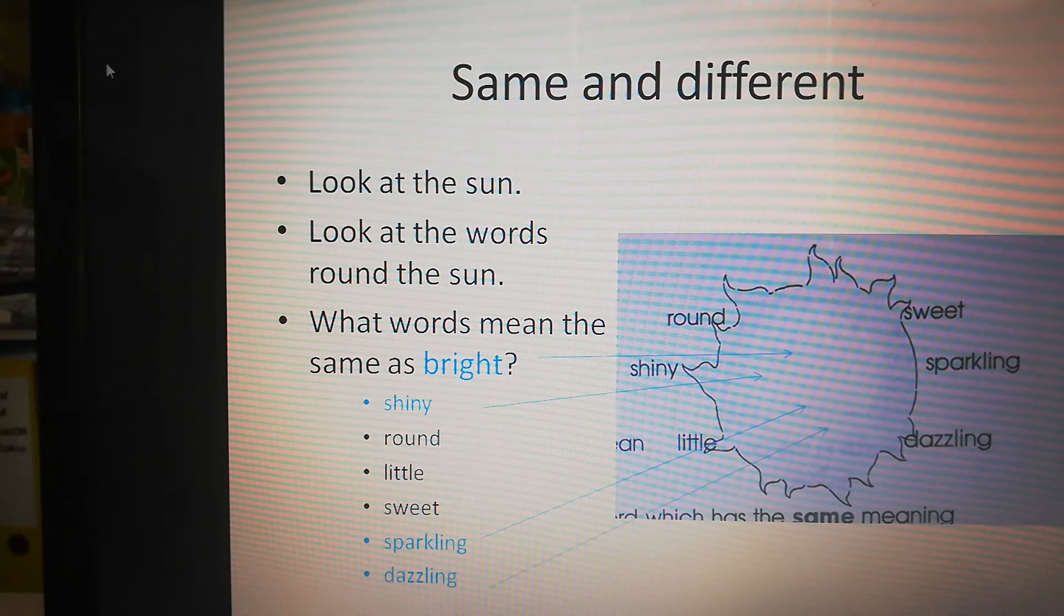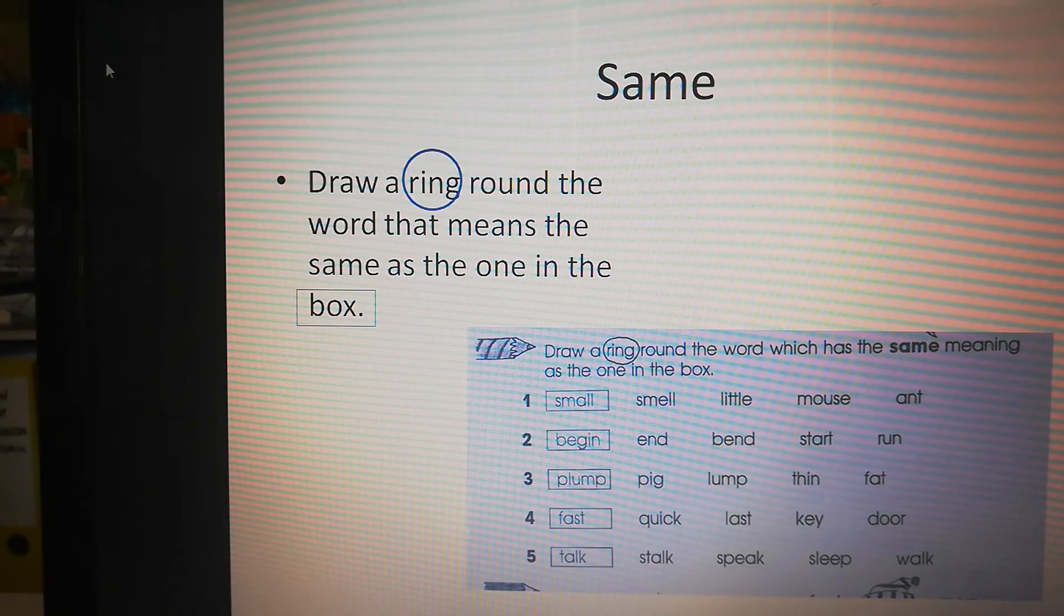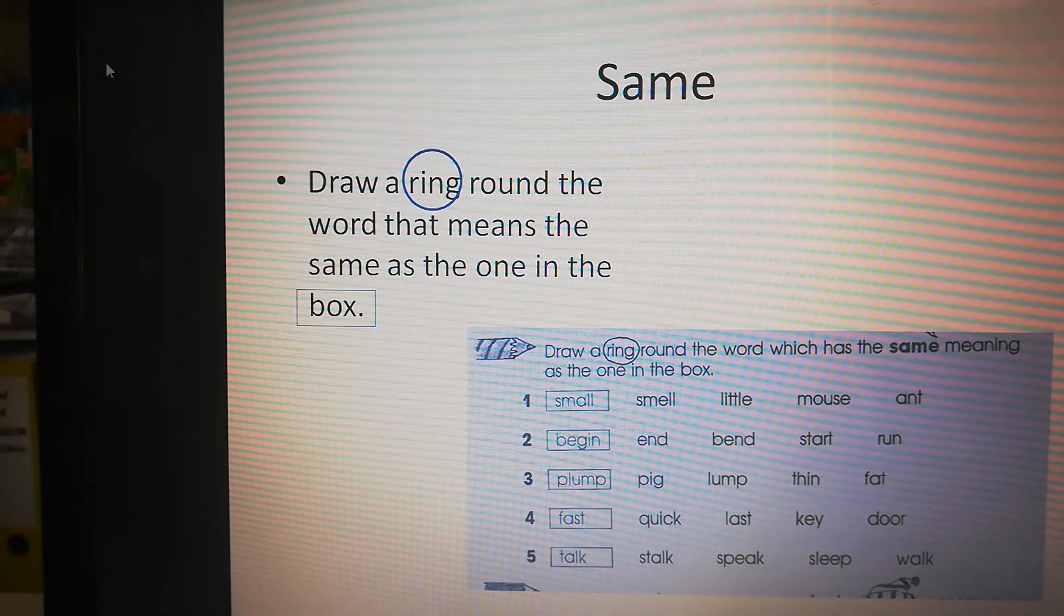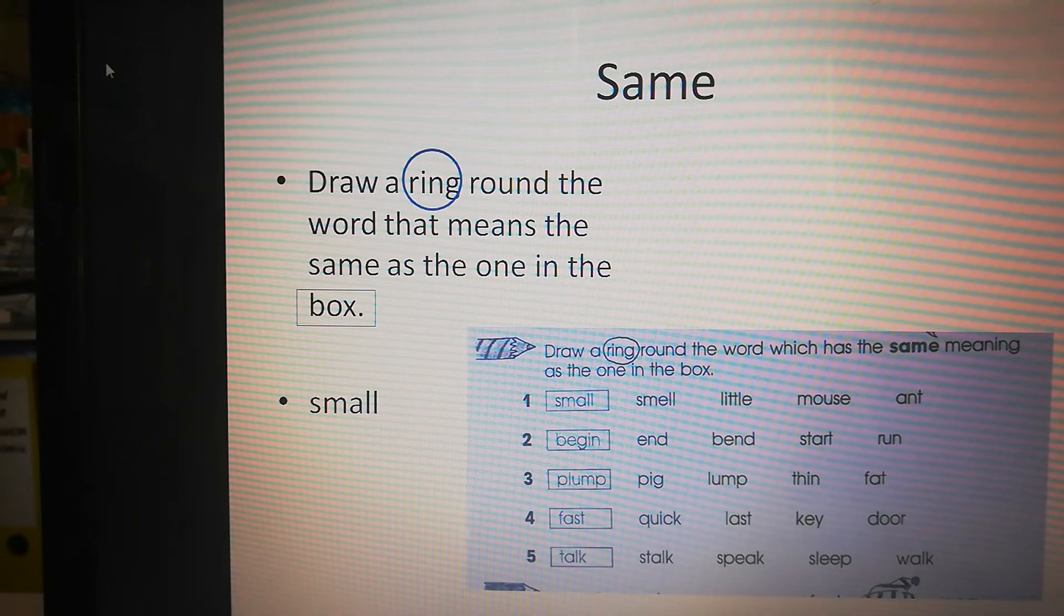Let's look at the next one. We're thinking about words that mean the same. You're going to draw a ring around the word that means the same as the one in the box. So first you see the box. In the box you see the word small. And then you see smell, little, mouse, and ant. What word means the same as small? Is that smell, little, mouse, or ant? That's right. It's little. So draw a ring around little.